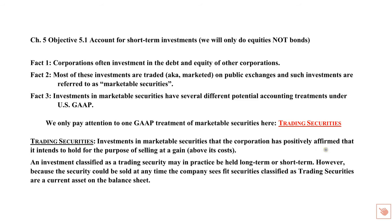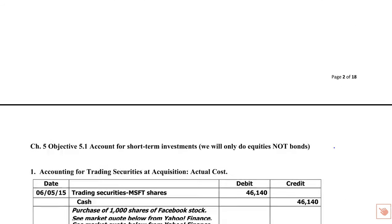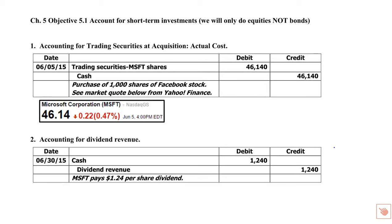A trading security is one where the company intends to hold it and sell it for a profit. At acquisition, all we have to do is record the actual cost — it's like the company bought a car or some other property. In this example, they're buying Microsoft shares: 1,000 shares at $46.14 per share, pulled from Yahoo Finance, equals $46,140. You pay cash for those shares.